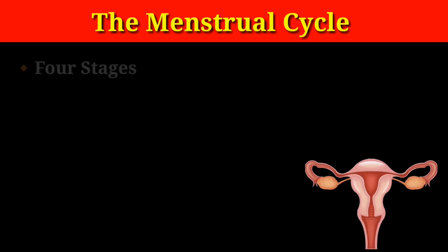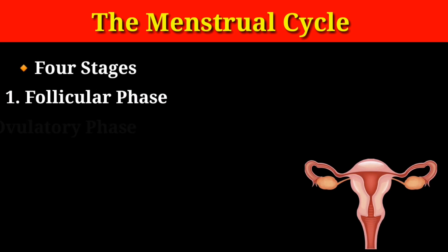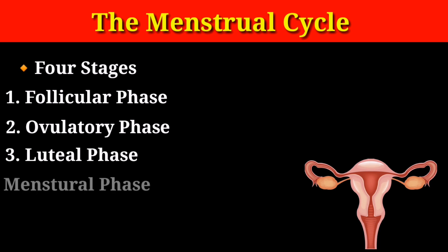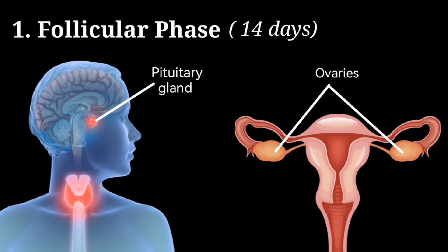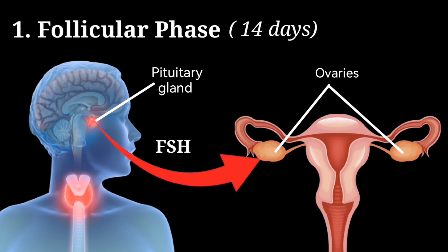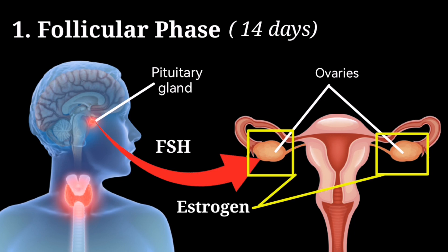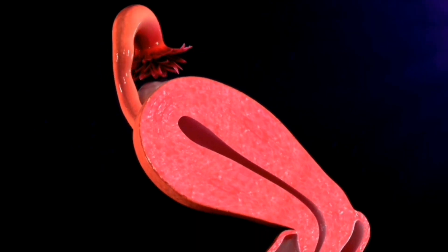The menstrual cycle has four stages: the follicular phase, the ovulatory phase, the luteal phase, and the menstrual phase. The follicular phase is the first stage and lasts for around 14 days. During this phase, the body releases a hormone called follicle stimulating hormone, also known as FSH, which stimulates the ovaries to produce estrogen. This estrogen helps to thicken the lining of the uterus in preparation for pregnancy.